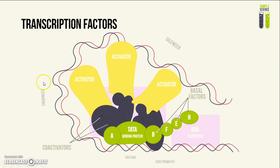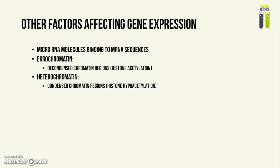Working together, enhancer and silencer regions help to produce more proteins at certain points in time and produce less proteins at other points in time. There are, of course, other factors that also affect gene expression besides transcription factors with silencers and enhancers.